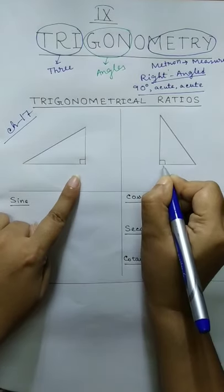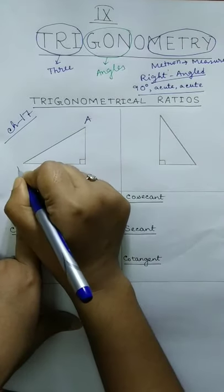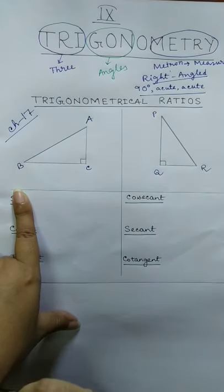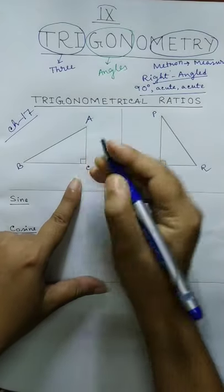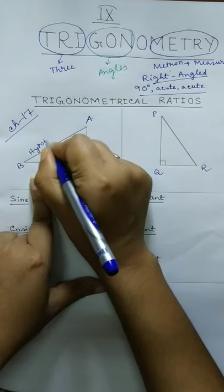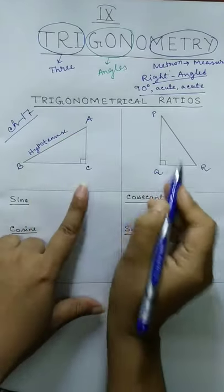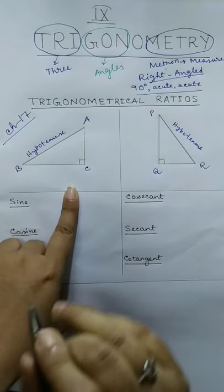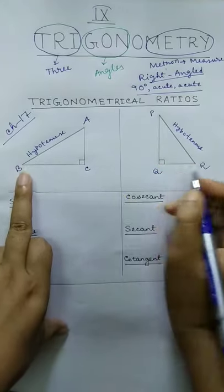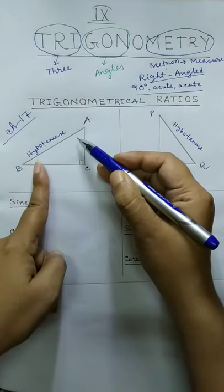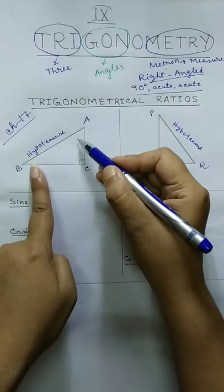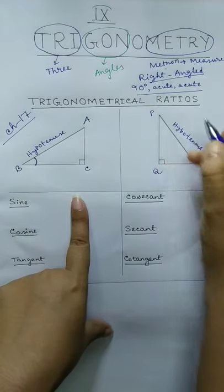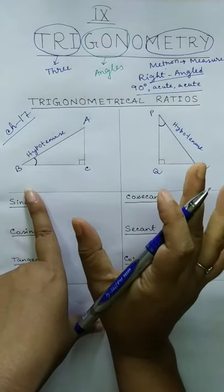I have pointed here two places. Now name the triangles — suppose this one is ABC and this one is PQR. The side opposite to the right angle is known as the hypotenuse. So in this triangle, this one will be the hypotenuse. Now we must have one of these two acute angles — any one acute angle we have to take.